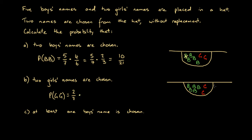We multiply that by the probability that a girl is chosen on the second try. Once we've chosen a girl's name on the first try, we've removed one girl's name from the hat, so there are six names left and only one is a girl. The probability on the second draw is one over six. Multiplying through gives two over 42, which simplifies to one over 21. So the probability that two girls' names are chosen is one over 21.